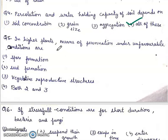Question 5: In higher plants, means of perennation under unfavorable conditions are first, spore formation; second, seed formation; third, vegetative reproductive structure; fourth, both 2 and 3. Answer will be fourth, both 2 and 3.